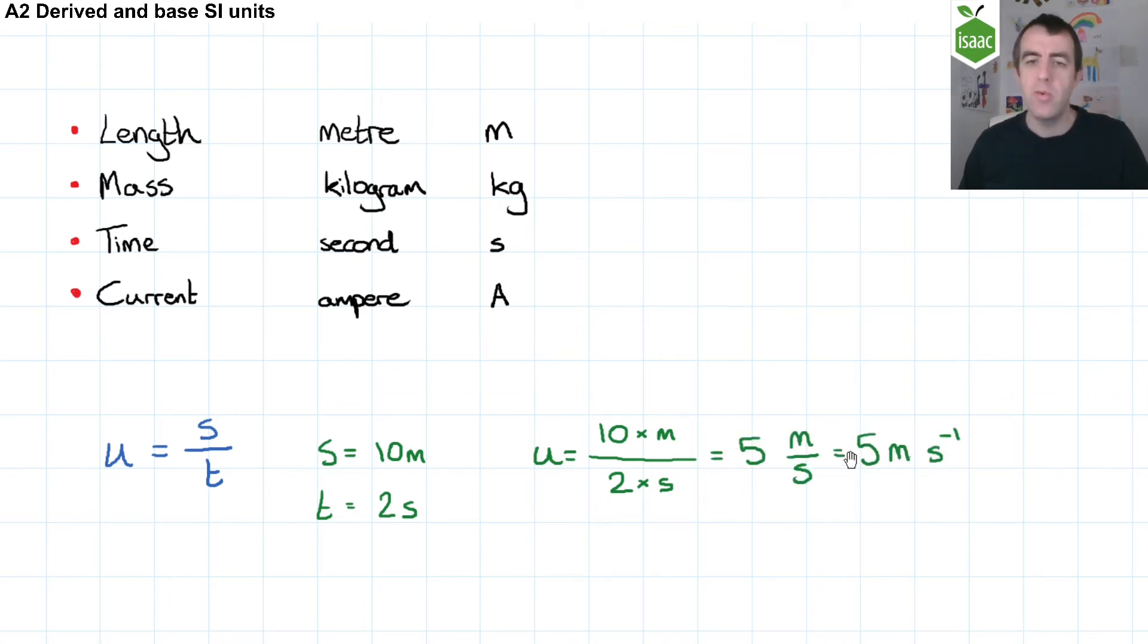And in A-level physics, we would commonly represent that as five metres per second, where the second has a power of negative one. But I could just as correctly present it like this. Of course, I wouldn't because it's not very clear what we're doing. But for the purpose of this exercise, it's a good thing to do, because we can see clearly that the derived SI unit has parts of the base SI units within it.